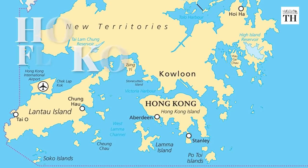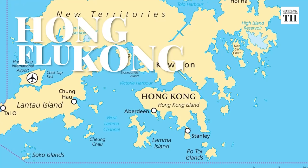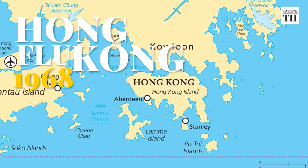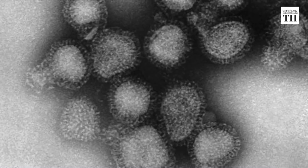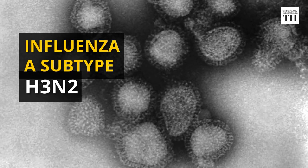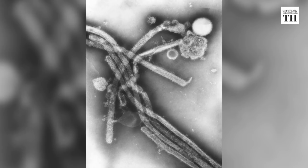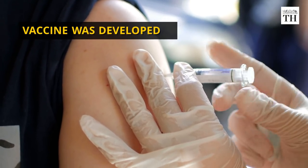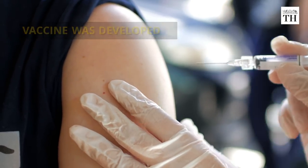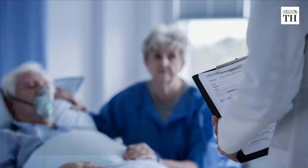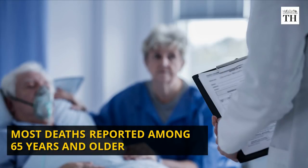The Hong Kong flu was a global outbreak of influenza that originated in China in July 1968 and lasted until 1969 to 1970. It was caused by influenza A subtype H3N2, also called the Hong Kong flu virus. Although a vaccine was developed, it became available only after the pandemic had peaked in many countries. The Hong Kong flu resulted in an estimated 1 to 4 million deaths, with most excess deaths in people 65 years and older.